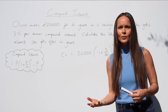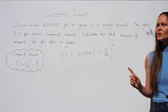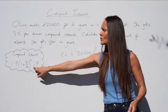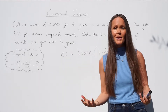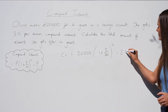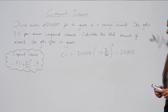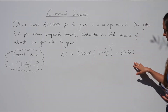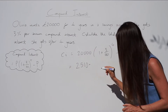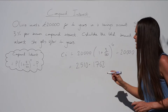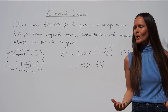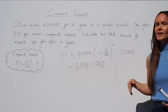To work out the compound interest specifically, we have to remember to subtract P — the principal amount, the money she started with — so minus £20,000. Now the formula is complete. If you put this into the calculator you should get 2510.1762. This is an exact answer, and since the question doesn't say anything about rounding, you can leave your answer just like this and get full marks.